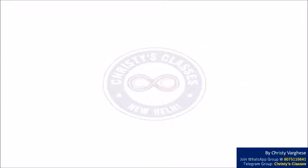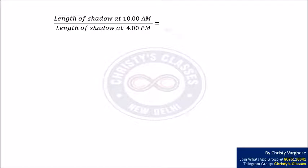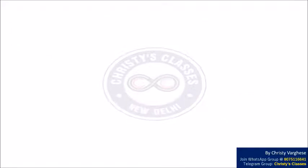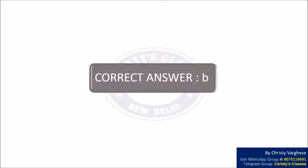Now we find the ratio of the shadow length at 10 a.m. to the shadow length at 4 p.m. The shadow at 10 a.m. is AB/√3 and the shadow at 4 p.m. is AB√3. Their ratio is (AB/√3) / (AB√3) = 1/3. Therefore, the shadow at 4 p.m. is 3 times longer than the shadow at 10 a.m. The correct answer is Option B.